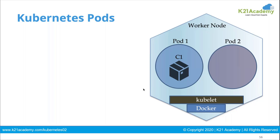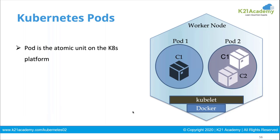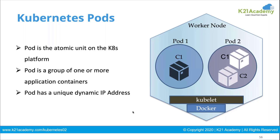A pod can be a single container or it can have multiple containers — a group of containers. Pod is the smallest unit. You can bring up a pod with a single container or with a group of containers. IP addresses are now tied to the pod. Containers share the port namespace inside the pod's IP address. For example, a pod gets IP address 1.2.3.4, and containers can listen on port 80 and port 81 within it.